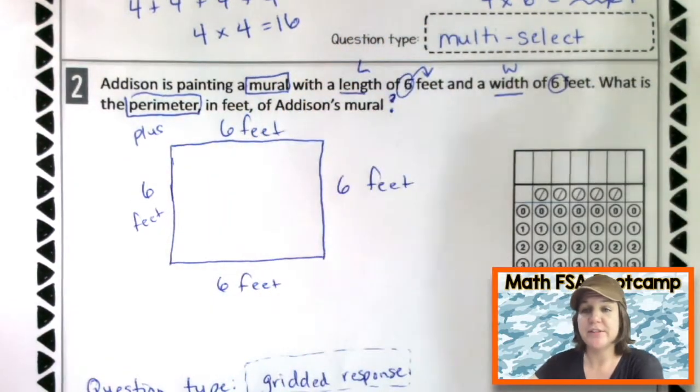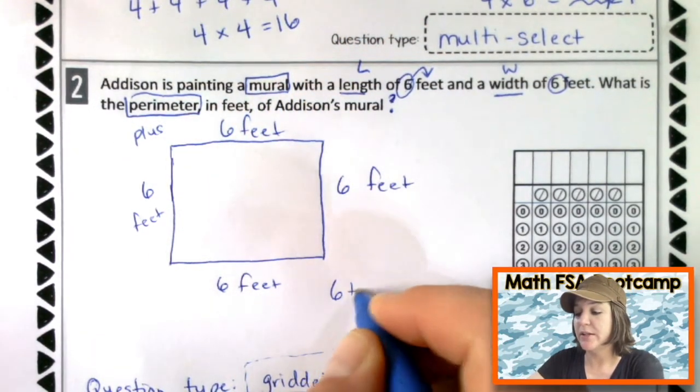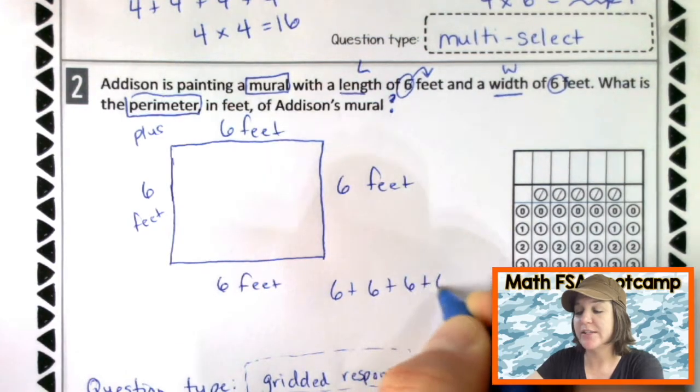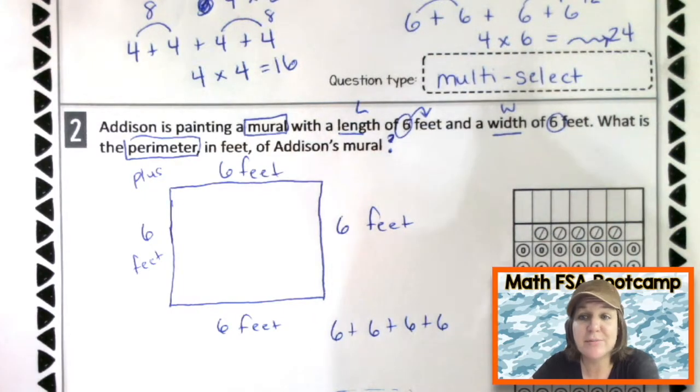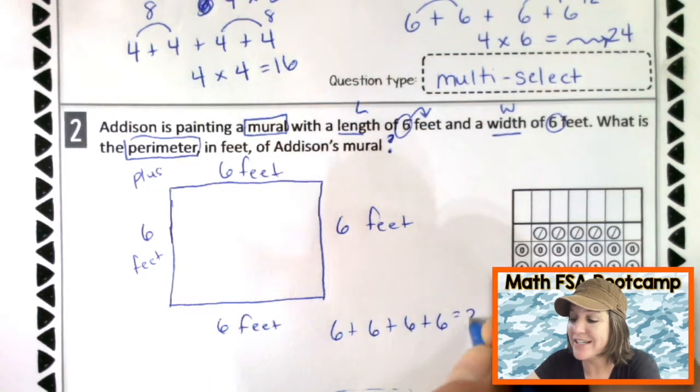So now that we're adding up all the sides, that would be six plus six plus six plus six. Hey, we've already done that right here, huh? When we added six plus six plus six plus six, we got 24 feet.